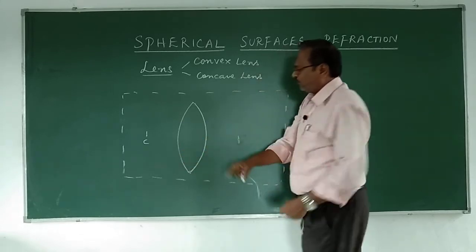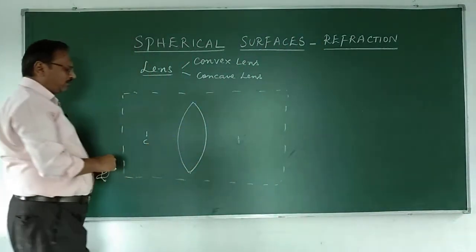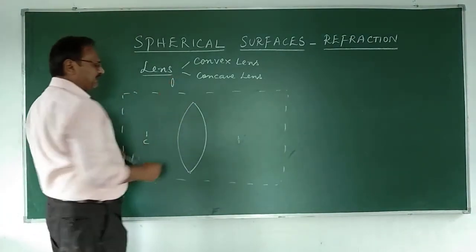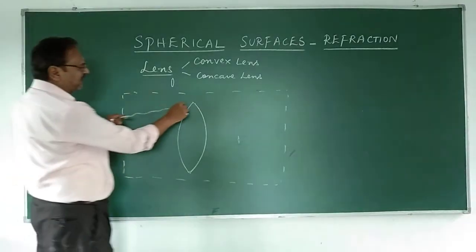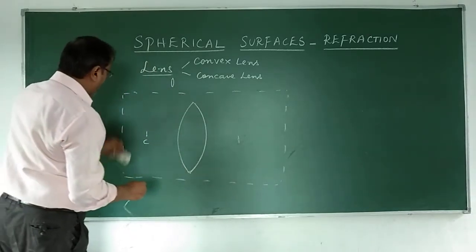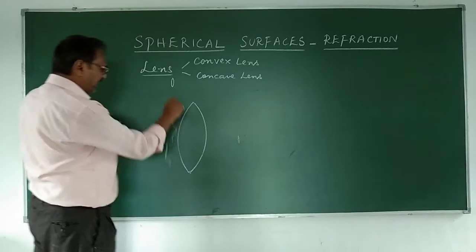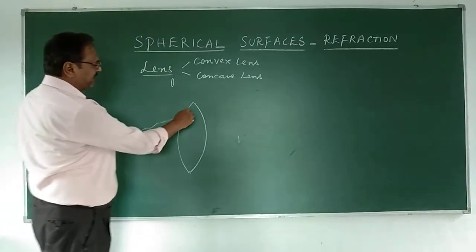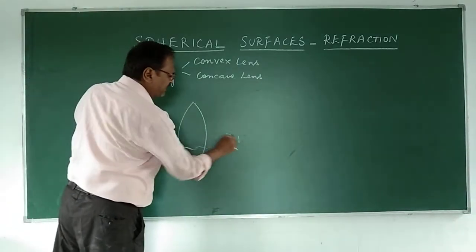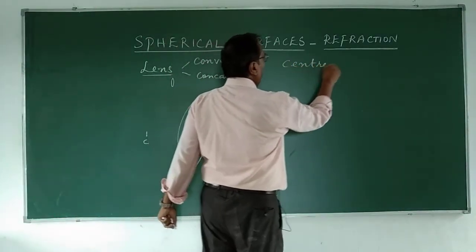This is a thin lens, though on the board I have drawn a thick one. The lens is bulged outward — curved on both sides. We don't need the entire slab; we cut it and take only the refracting surface. Now notice there are two centers — these are called centers of curvature, C1 and C2.